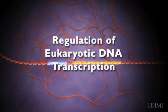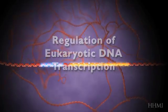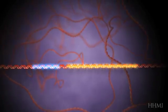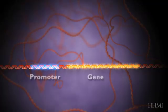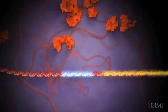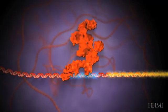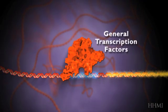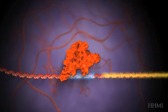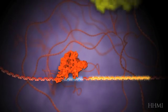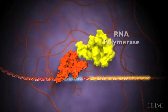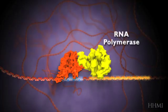In eukaryotes, DNA transcription begins when general transcription factors bind to the promoter region of the gene. Those transcription factors facilitate the binding of the RNA polymerase enzyme to the start position of the gene.